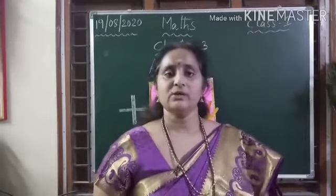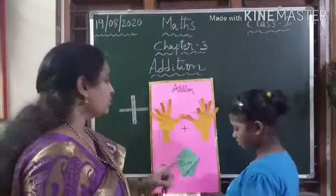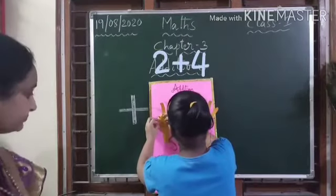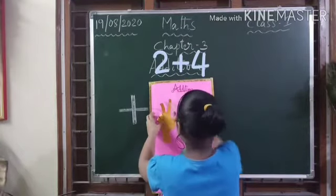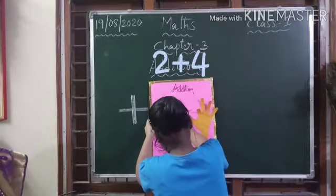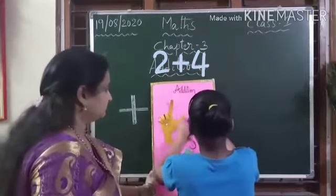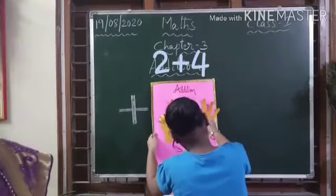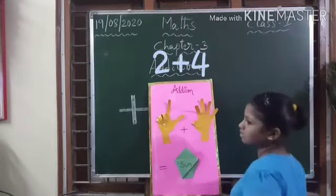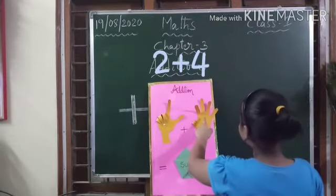Now let us do the addition using fingers. Sai, come and do the problem. I am giving you two plus four — do the problem using fingers. In this hand two fingers, in this hand four fingers. One, two, three, four, five, six. Two plus four equals six.